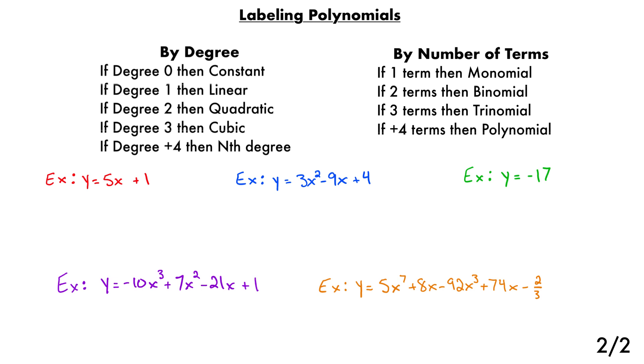For problem number one, first we're going to be looking at the degree of the function. So we're going to scan the entire equation for the highest degree of x. This is the highest degree of x, and even though it is not written, it is to the first power. So this is a degree one polynomial, which we have a name for. It's called a linear polynomial. So the first part of its name is it is linear.